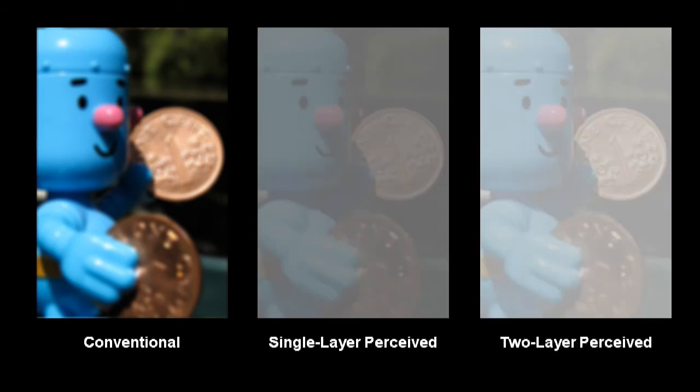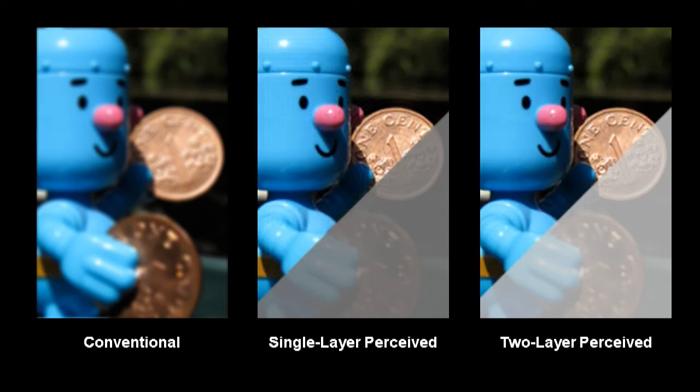Here we consider a second example. Notice that pre-filtering allows the face of the coin to be read. Also notice strong ringing on the face is eliminated using two layers.